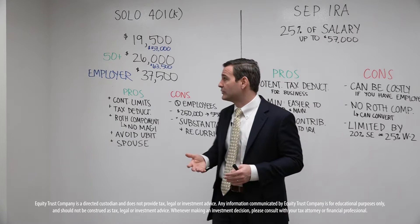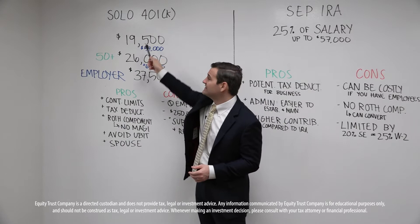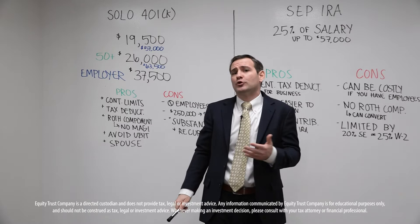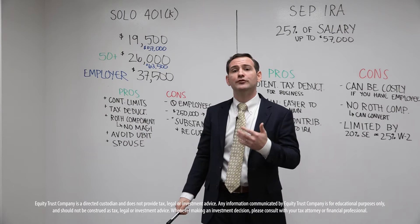Let's talk about how much money you can put into a solo 401k. If you are under the age of 50, you can contribute up to $19,500. Keep in mind, it's up to 100% of your earned income, not to exceed $19,500. So if you're only paying yourself $20,000 as a realtor, for example, you can put the full $19,500 into the plan.